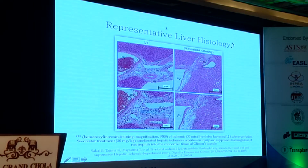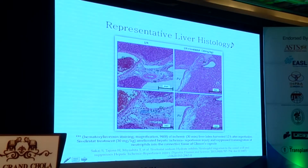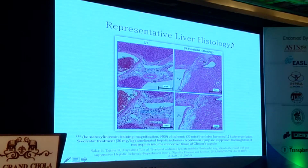Liver biopsy results from those rat experiments show that without treatment there is a fair amount of hepatocyte necrosis and neutrophil infiltrate, whereas treated animals showed more normal-looking parenchyma. While this is a rat model, it shows real promise for sivelestat as a mitigating agent.